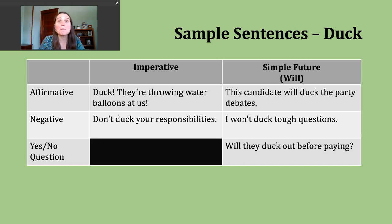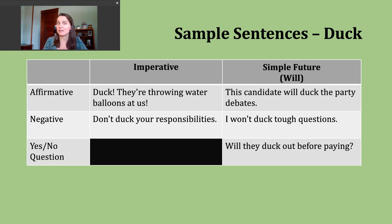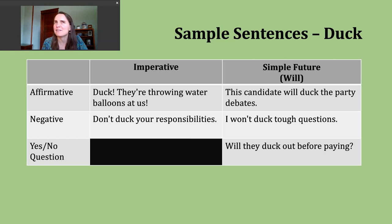Finally, let's talk about making a yes or no question in the simple future. To do this, start with will, then the subject, then the base verb. An example: will they duck out before paying? — meaning are they going to try and leave secretly and quickly before the check comes? Maybe you know someone who behaves like that — just an example sentence, but hopefully not.